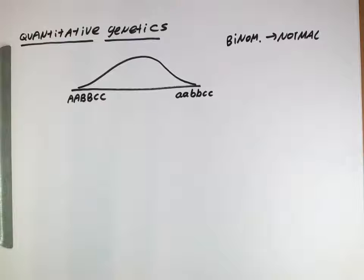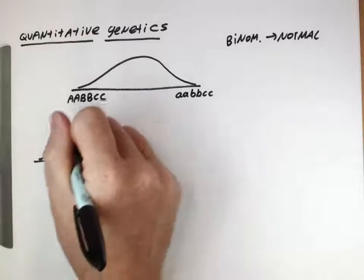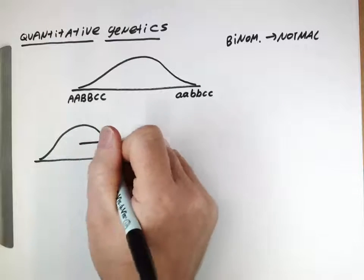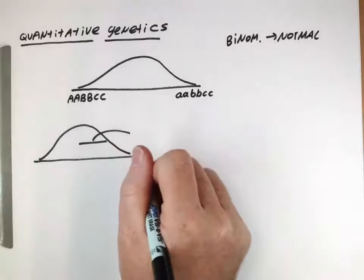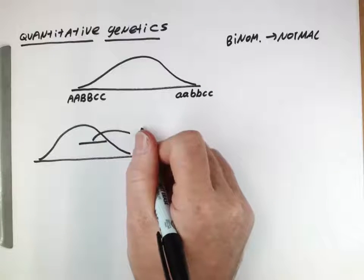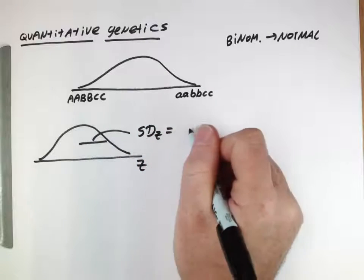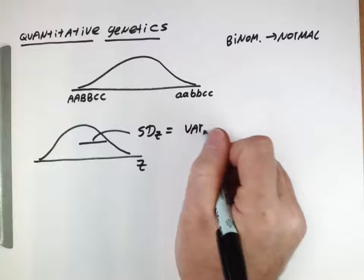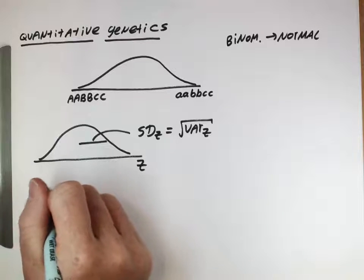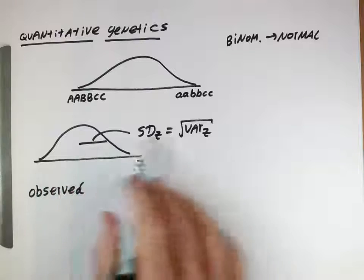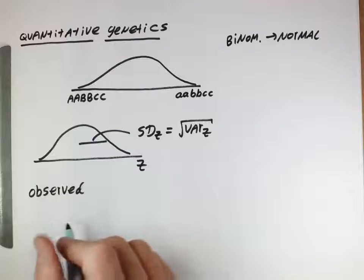When we have a normal distribution like so, we can measure the width of it. One of the reasons we're interested in the width is because the variation within a population is one of the key things for evolution. The width of the distribution — if we think about our trait being z — we can measure it with the standard deviation of z, which is the square root of the variance of z. This overall spread, this variance, is due to several things.